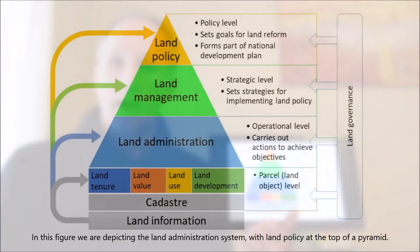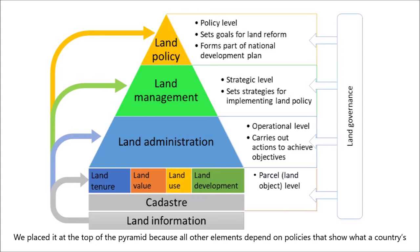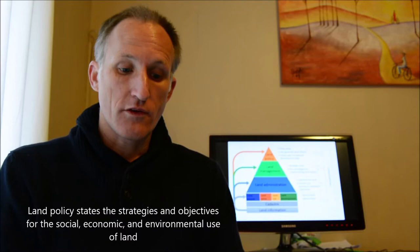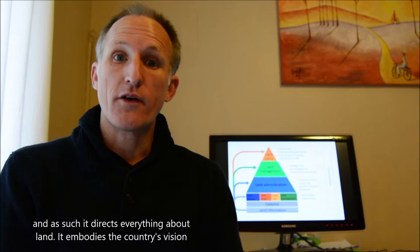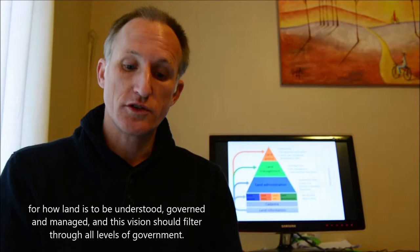In this figure we are depicting the land administration system with land policy at the top of a pyramid. We place it at the top of the pyramid because all other elements depend on policies that show what a country's priorities are and how policies reflect a country's understanding of how humans should use and manage land. Land policy states the strategies and objectives for the social, economic and environmental use of land and as such it directs everything about land. It embodies the country's vision for how land is to be understood, governed and managed, and this vision should filter through all levels of government.